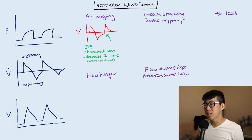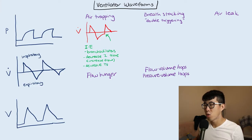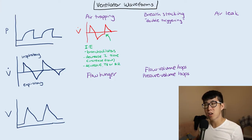The other thing you can do is actually decrease your tidal volume or respiratory rate, because decreasing both of these are going to lead to reduced I time and prolonged E time, which will help alleviate that air obstruction.